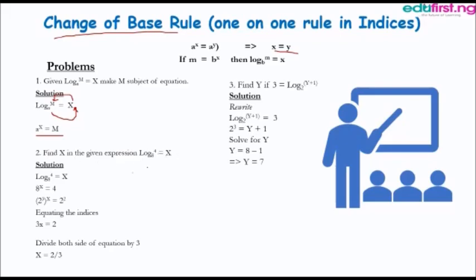Problem 2 says: find X in the expression log 4 to base 8 equals X. Just like in Problem 1, the base, which is 8, will be raised to power X, and everything will be equal to 4. So we have 8 raised to power X equals 4.